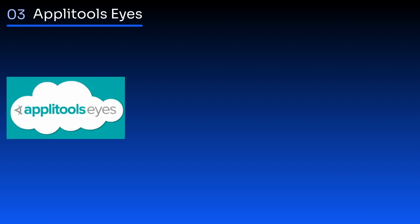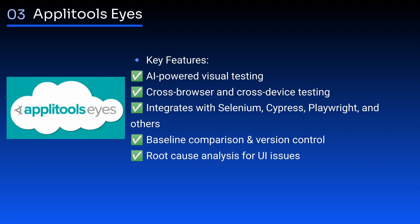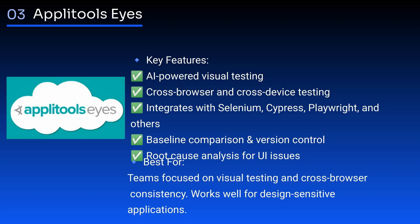Applitools Eyes specializes in visual AI testing, ensuring the UI appears correctly across different browsers, screen sizes, and environments. It uses visual AI technology to detect UI changes. Key features: utilizes AI for visual testing, tests across browsers and devices, works with Selenium, Cypress, Playwright, and more, compares baselines and manages versions, and analyzes root causes of UI issues. Best for teams prioritizing visual testing and browser consistency — perfect for design-sensitive apps.